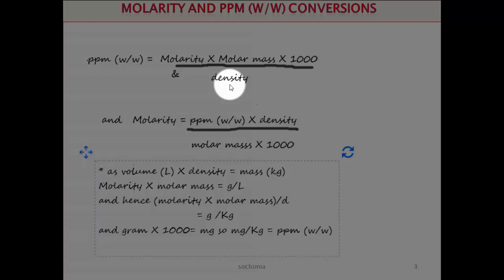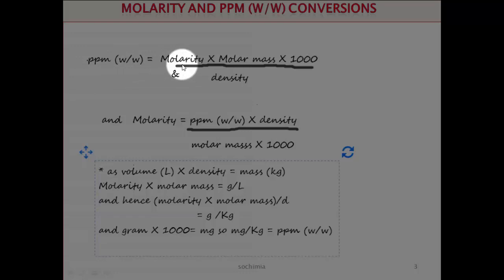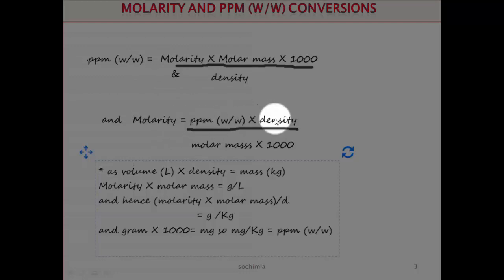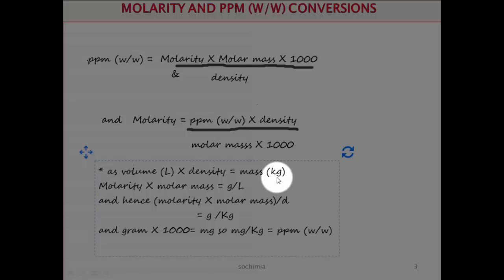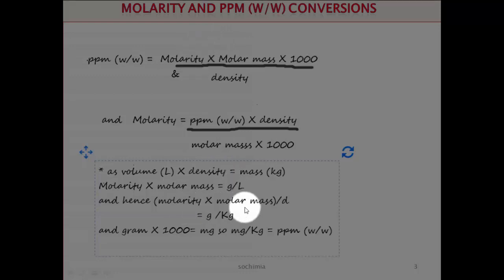Density can be used to calculate volume or mass if the other property is given. Because ppm weight by weight is a mass-to-mass ratio and molarity has a volume factor, in order to convert that volume factor into mass we need density. This equation can be rearranged: if you have ppm weight by weight you can calculate molarity provided you have the density of the solution. Volume in liters multiplied by density gives mass of solution in kilograms — which is needed for ppm weight by weight. Molarity multiplied by molar mass gives grams per liter; divided by density gives grams per kilogram, which is used to calculate ppm values.